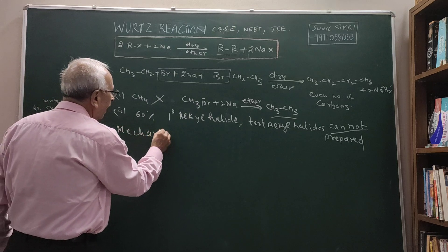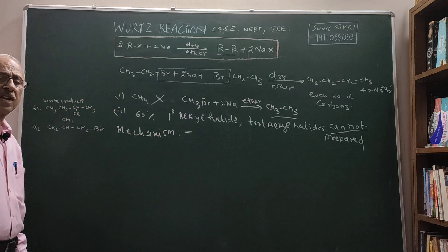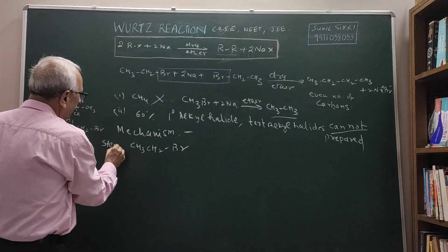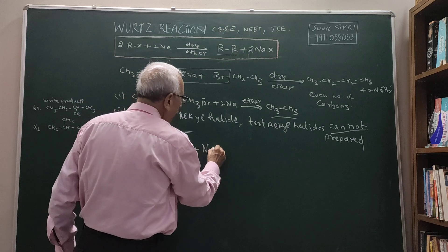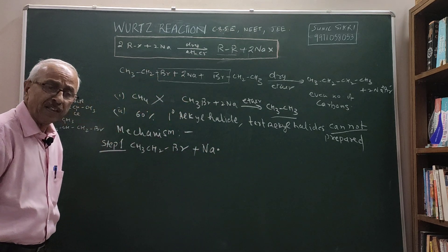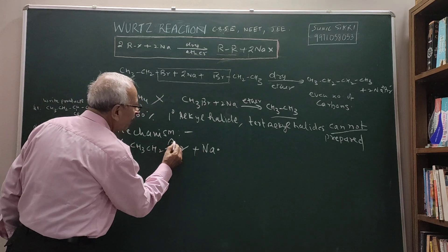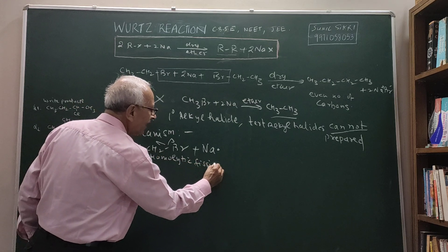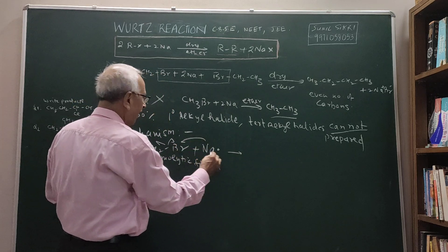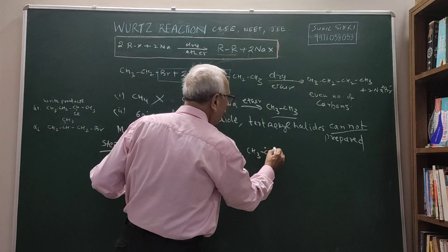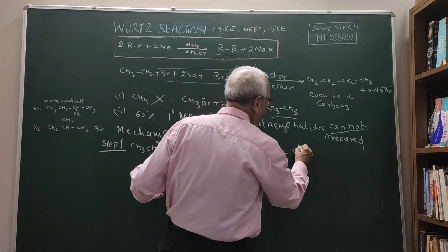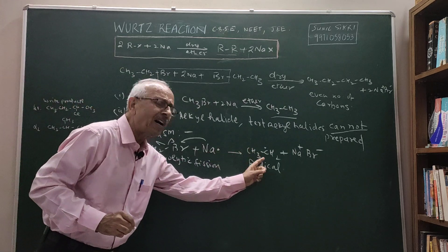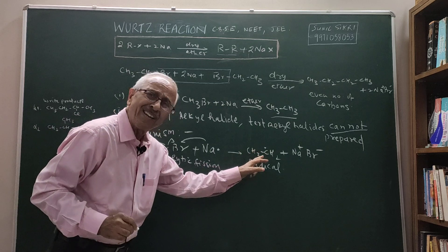Let us see the mechanism of the reaction. This involves a radical mechanism. For example, if I take CH3CH2Br in step one, what is going to happen? When it reacts with sodium — sodium has got one electron in its outermost shell — this is an example of homolytic fission. The result is that sodium gives its electron to the Br, generating CH3CH2• (an ethyl radical) plus Na⁺Br⁻. This radical has only one electron and is therefore a very reactive species, in need of one electron.